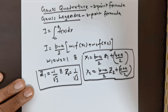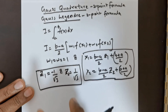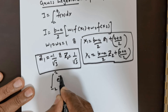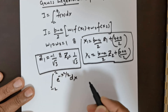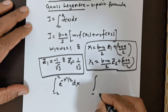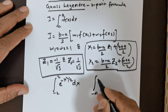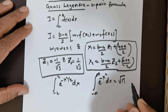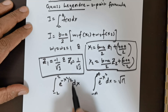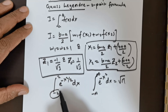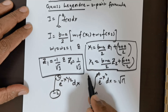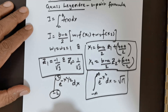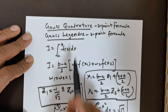Now I am going to demonstrate how to utilize this formula to solve this question: the integral from −2 to 2 of e^(−x²/2) dx. Now, if you remember the Gaussian integral — the integral from −∞ to +∞ of e^(−x²) dx equals √π — the main issue with this question is that the limits are −2 to +2, so that is a huge challenge. I am going to show you how to solve this using the Gauss-Quadrature two-point formula.